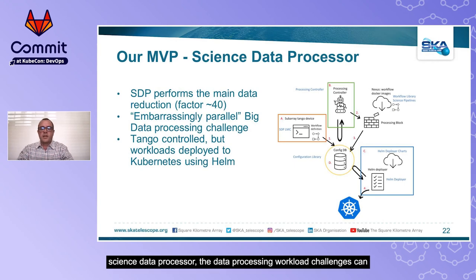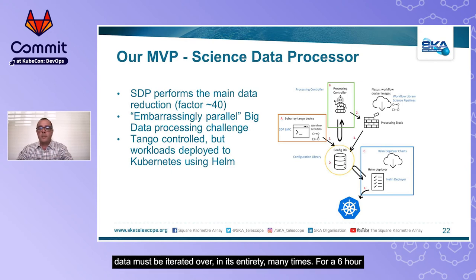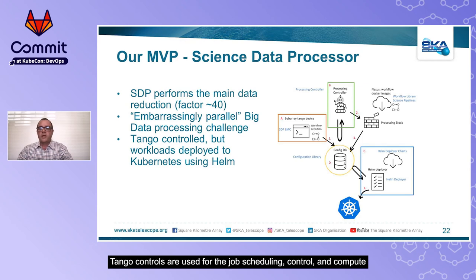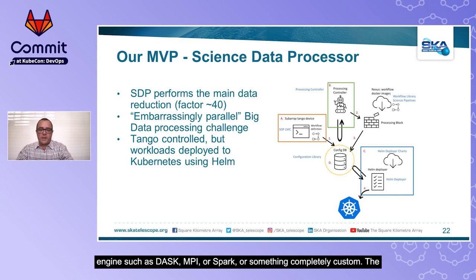Switching to image processing in the science data processor, the data processing workload challenges can largely be managed through divide and conquer. A complete observation data ingest must almost finish before processing can start, as the data must be iterated over in its entirety many times. For a 6-hour observation at 7 terabits per second we have 19 petabytes of data, which can be divided into time-frequency mosaic partitions and processed independently for a large portion of the processing loop. Tango Controls are used for job scheduling control and compute storage resource management, and at the time of launch the executor calculates job placement and submits jobs using Helm. These jobs could contain almost any execution engine such as Dask, MPI, or Spark, or something completely custom — the idea is not to limit the technology choice.